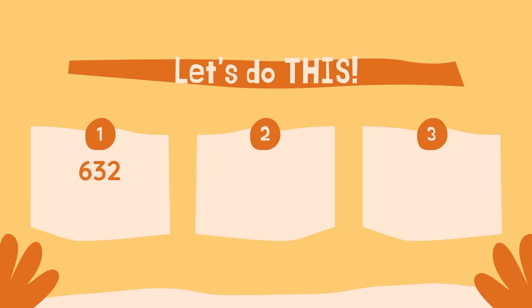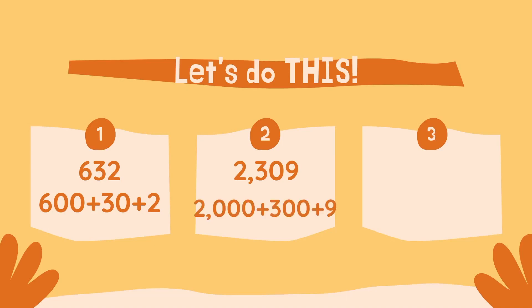Did you write down 600 plus 30 plus 2? That's it! Get ready, here comes the next one: 2,309. On your paper, write what that would look like in expanded form. Did you write 2,000 plus 300 plus 9? I threw that one in there just to be a little tricky — I was hoping maybe you'd wonder what to do with that zero.